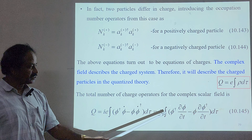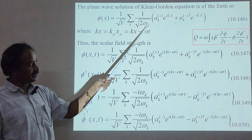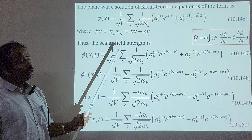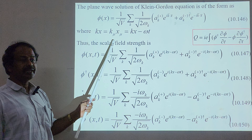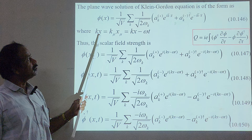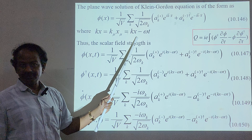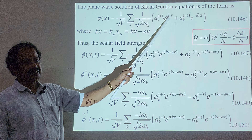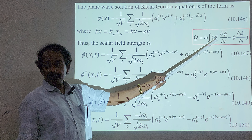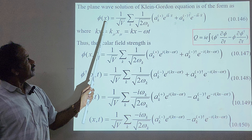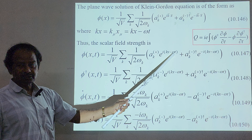We know the expression for phi(x). We now introduce the four-coordinate form kx → kμxμ = k·x − ωt, including the time coordinate. Wherever we find kx we substitute kx − ωt. For phi†, we write the corresponding expression. Then we differentiate phi with respect to t to get φ̇. Differentiating with respect to t brings down a factor of −iωk from the first term and +iωk from the second term, which we factor out as −iωk common.